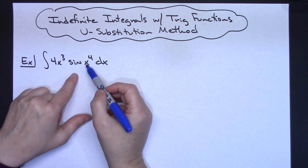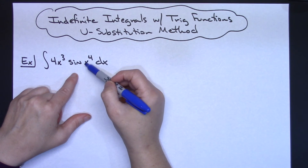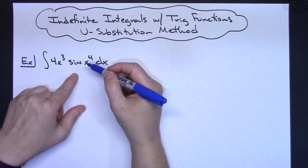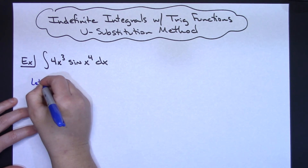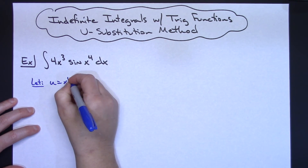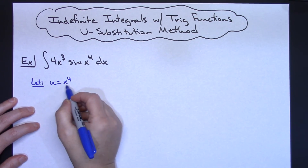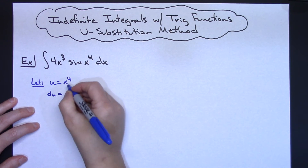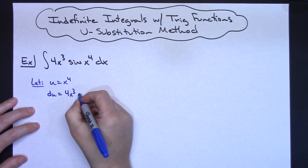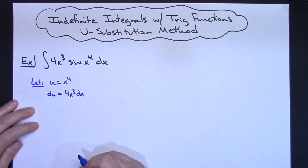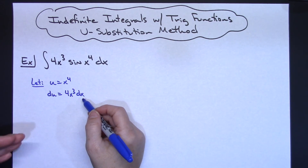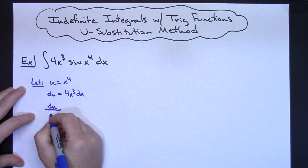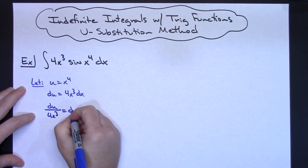For this first example, I'm going to integrate 4x³ sin(x⁴) dx. You want to look for a composite function — I've got sin(x⁴), where my inside function is x⁴ and my outside function is sine of something. I'm going to let u equal that inside part, so u = x⁴. Taking the derivative of both sides: du = 4x³ dx. In my classes I have students solve for dx, so dividing both sides by 4x³ gives du/(4x³) = dx.